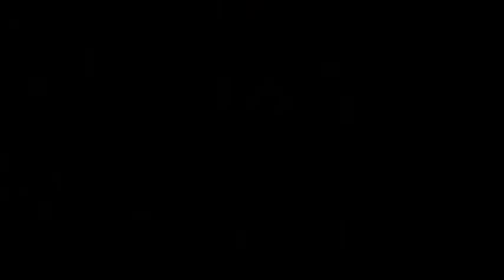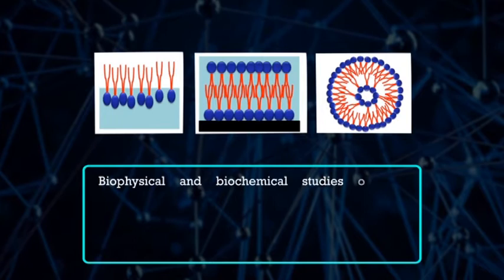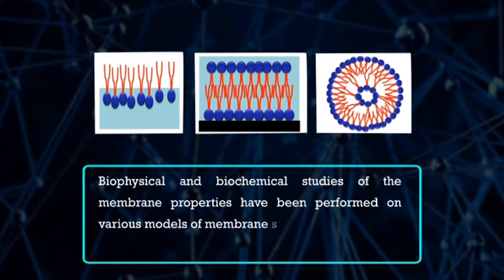Biophysical and biochemical studies of membrane properties have been performed on various models of membrane structure, such as lipid monolayers, multilayers, liposomes, etc. Historically, the first models of membrane structure were the lipid monolayers that played a considerable role in establishing the bilayer nature of biomembranes in the first third of the 20th century.